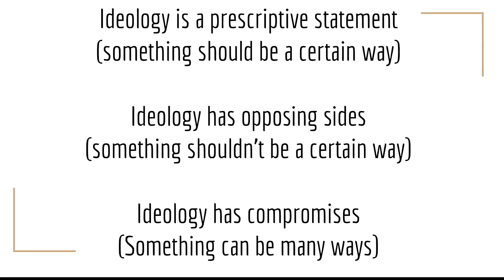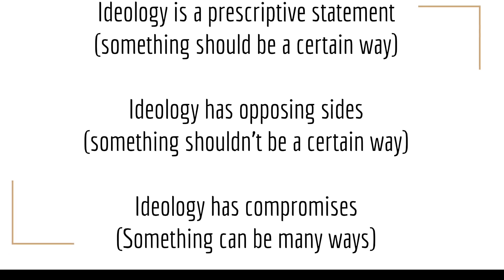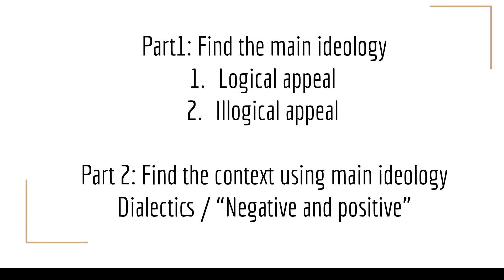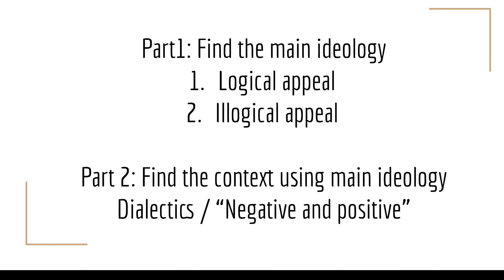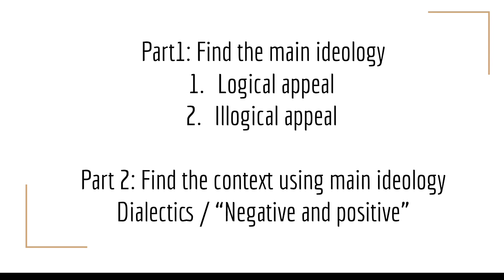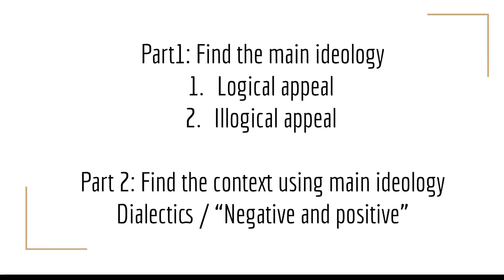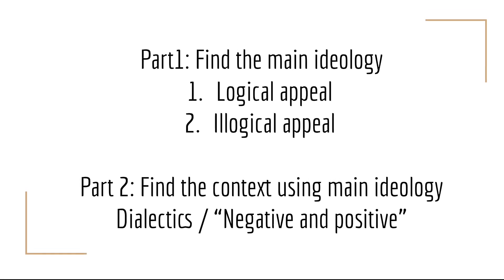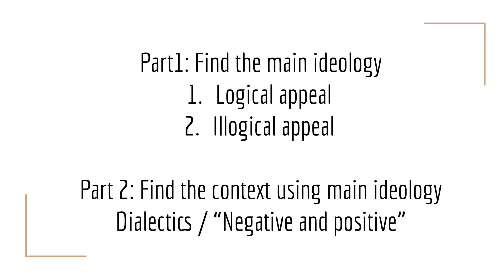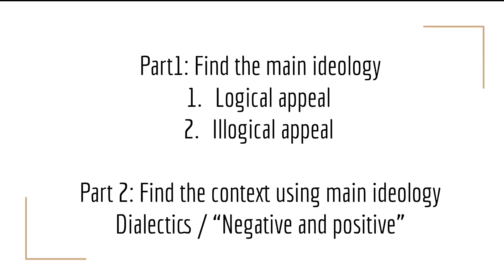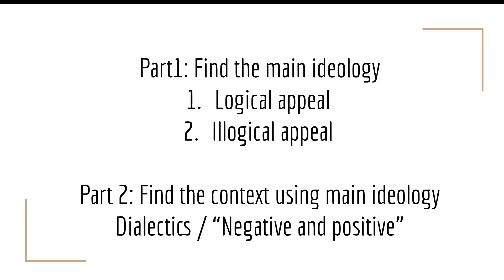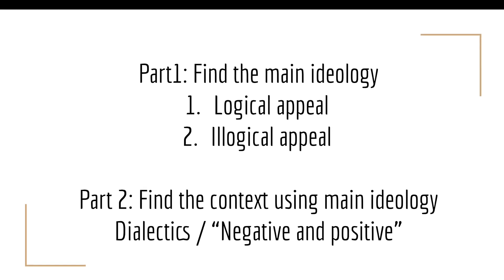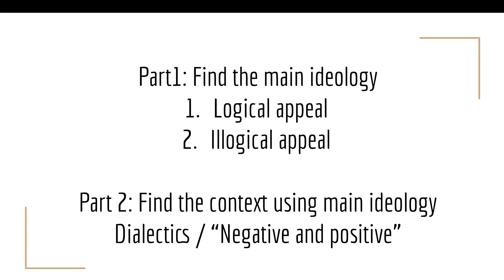This theory is inspired by the fundamental logic of Hegel's dialectics, also known as the negative and positive. To sum up, this method consists of two main parts. First, the main ideology of art is found through: (1) how the content, context, and background attempts to persuade the audience logically, and (2) how the formalisms — such as colors, structures, and so on — attempt to persuade the audience emotionally. Second, other standpoints around the main ideology are found using the negative-and-positive logical system. Then how the artwork attempts to persuade and attack other standpoints is analyzed to reveal the conflict and assess how effectively this piece of art persuades.